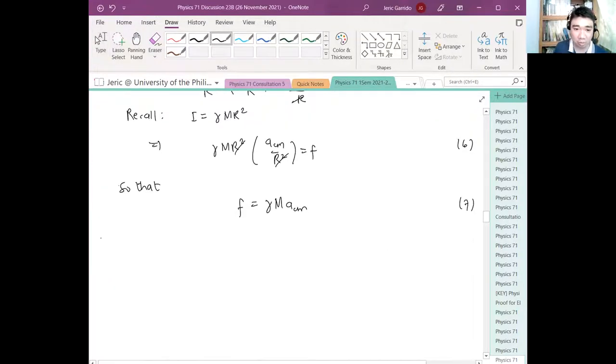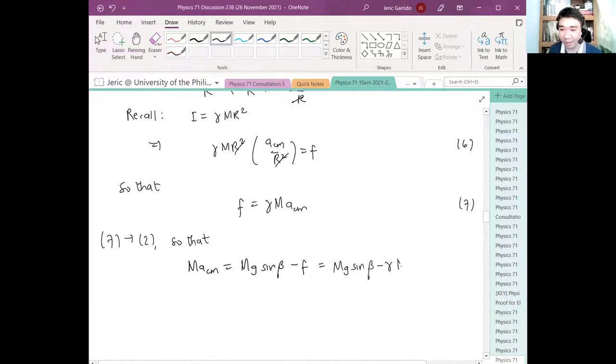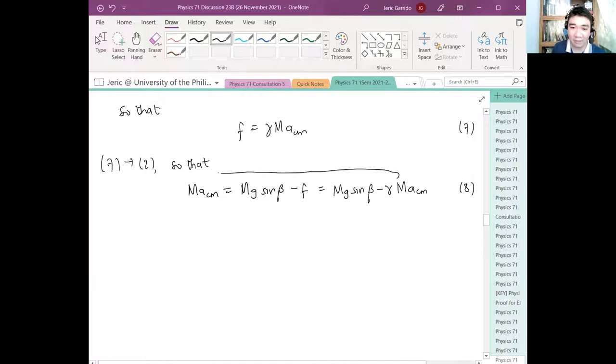Now going back, we used the torque relation already. We already used this one. And equation 3, we haven't used it and we won't use it. What we need to use is equation 2. So we substitute equation 7 to equation 2 so that M ACM equals MG sine beta minus F which equals MG sine beta minus gamma M ACM, equation 8.